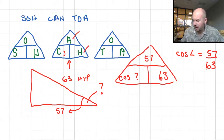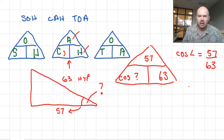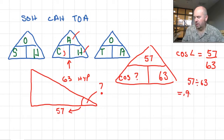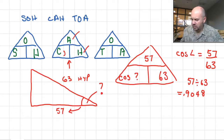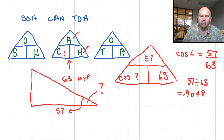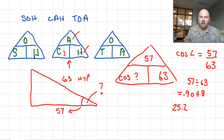In my calculator, 57 divided by 63 equals 0.9048. Now I go shift cosine and put that number in, and I end up with 25.2 degrees. Your calculators may work slightly differently, but this is the answer: the angle is 25.2 degrees.